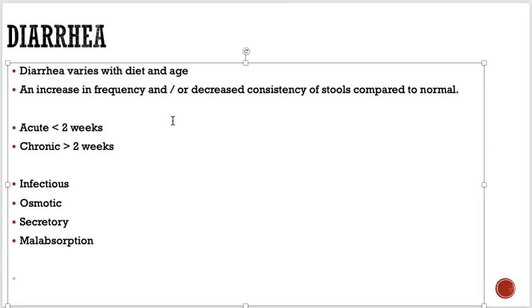Whenever anyone presents with diarrhea, we go for history, physical examination, and investigations. In the history, we inquire about when it started, whether it is acute or chronic, the consistency, the color, whether there is blood or mucus, duration, and associated symptoms like fever and abdominal pain. We also ask about recent travel history, recent drug use, or any change in diet.